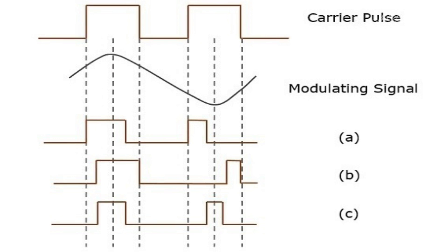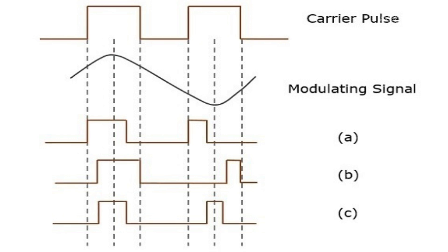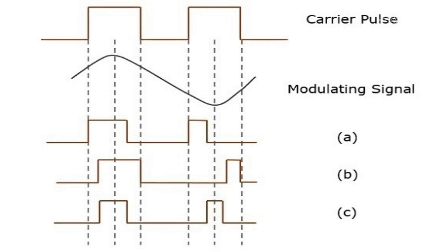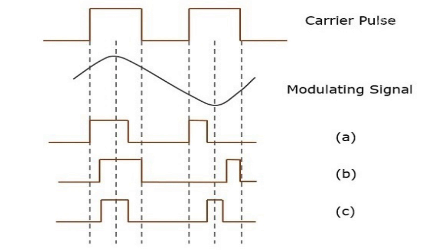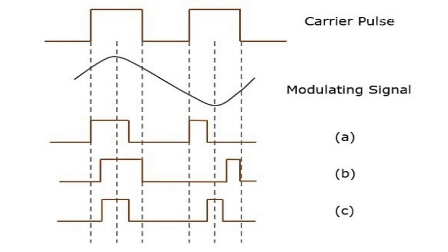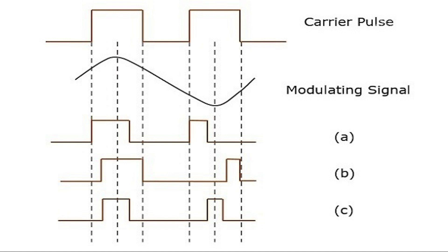The following figure explains the types of pulse width modulation. There are three types. First, the leading edge of the pulse is constant while the trailing edge varies according to the message signal — the waveform for this type is denoted as A in the figure. Second, the trailing edge of the pulse is constant while the leading edge varies according to the message signal — denoted as B. Third, the center of the pulse is constant while both the leading and trailing edges vary according to the message signal — denoted as C.